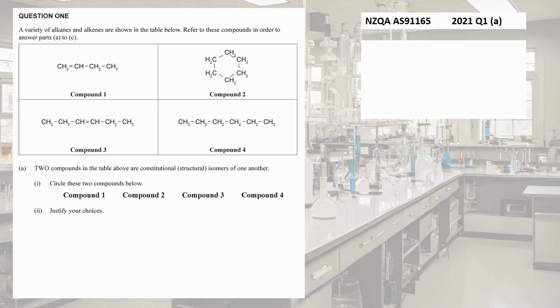Okay, structural isomers — sometimes called constitutional isomers. What are they? These are when we have the same number and type of atoms but bonded in a different structural way.